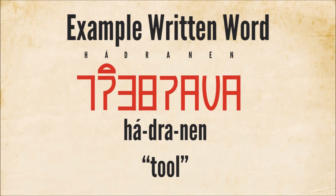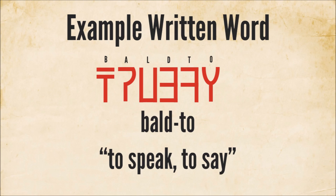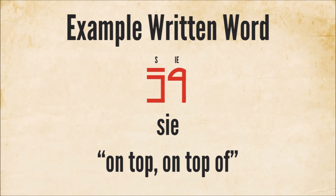We'll go over a couple of example words. The first one is 'hadranen,' which means 'tool,' and you'll see it has eight total symbols, just like it would be written out in English. The second example is 'balto,' meaning 'to speak,' which has six symbols, just as we'd expect. And this next one, 'sieh,' means 'on top of' and has two symbols. If you'll remember, the consonant S is going to have just one symbol, and then the diphthong 'yeh' — the combination of I and E — has its own symbol. So we just have two symbols for that word, even though in English it would be written out in three letters.